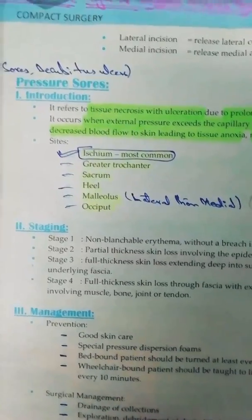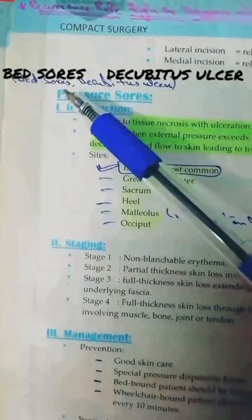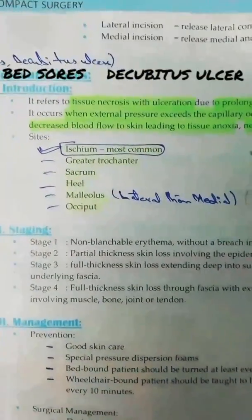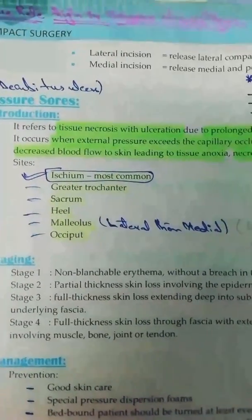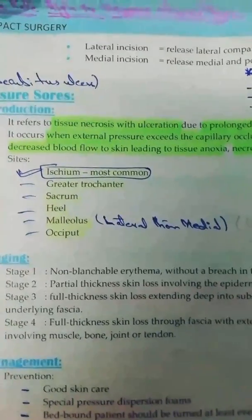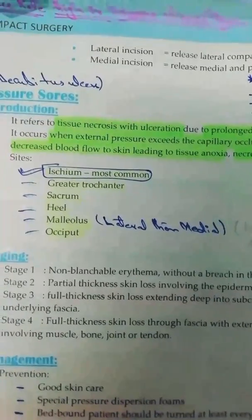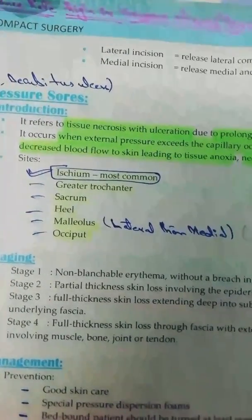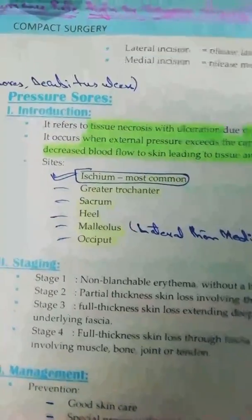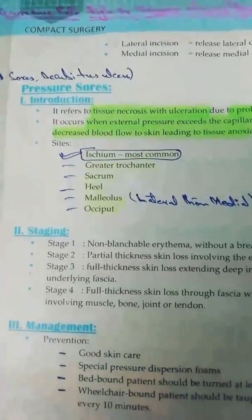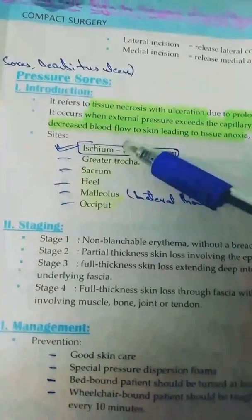You can find this topic at the end of chapter number three. Pressure sores — the name already tells us the cause is pressure. These are also called bed sores or decubitus ulcers. The phenomenon of pressure sores is that if pressure is applied to any area of the body from the external side for a very long time, the capillaries of the skin get damaged. As a result, the skin tissue won't be able to receive blood, leading to anoxia, necrosis, and ulceration.